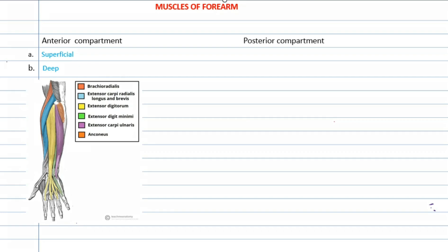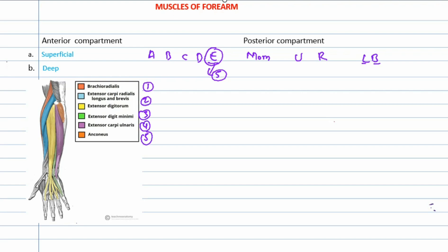Now let us use the easiest trick to memorize the muscles of the posterior compartment using the mnemonic A, B, C, D, E — and if you remember 'mom, you are love,' you will have it. Stay focused, write it down along with us, and you will never forget it. Through 'E', we write extensors — this being the extensor group — and we write it 5 times, for 5 extensors.